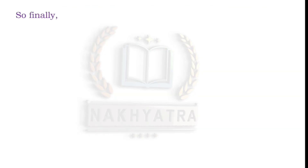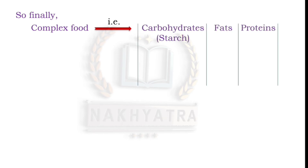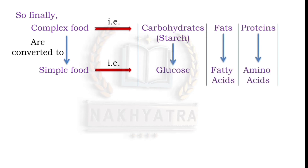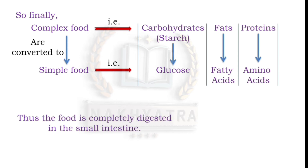So finally, the complex food — carbohydrates, fats, and proteins — are converted to simple forms: carbohydrates become glucose, fats become fatty acids, and proteins become amino acids. Thus the food is completely digested in the small intestine.